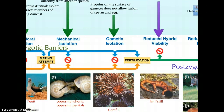Another barrier preventing different groups from producing zygotes is gametic isolation. The classic example is the sea urchin. Sea urchins release eggs and sperm into the water in external fertilization. Fertilization between different species is prevented because there are protein markers and receptors on the surface of the eggs and sperm. Just as receptors and ligands need complementary shapes to join, sea urchin species have particular receptors on the surface of their gametes that allow fertilization only with members of their own species, not different species.